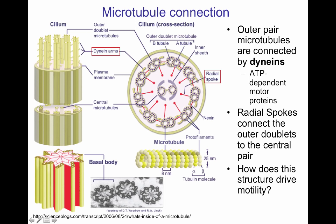The microtubule doublets surrounding the central pair are connected by radial spokes, and between the microtubule pairs are the dynein arms. The dyneins are ATP-dependent motor proteins that are able to move towards the negative pole of the microtubule. Those radial spokes connect the outer doublet to the central pair.